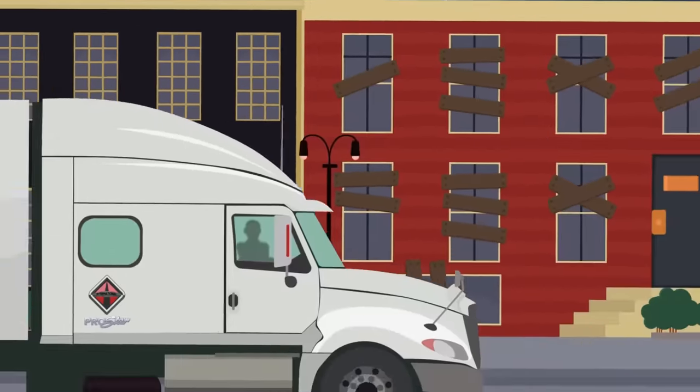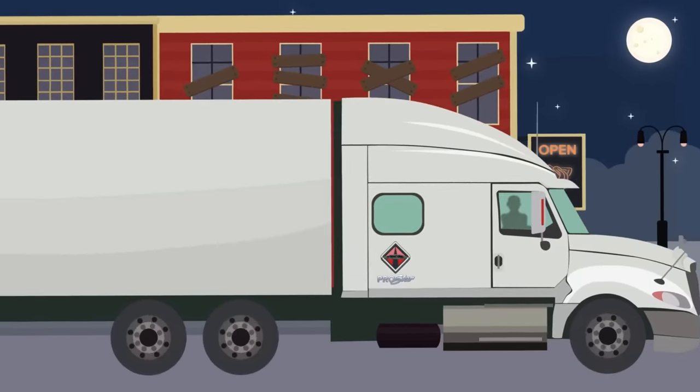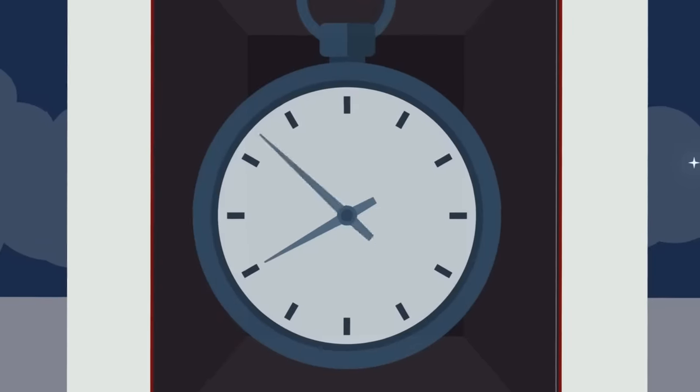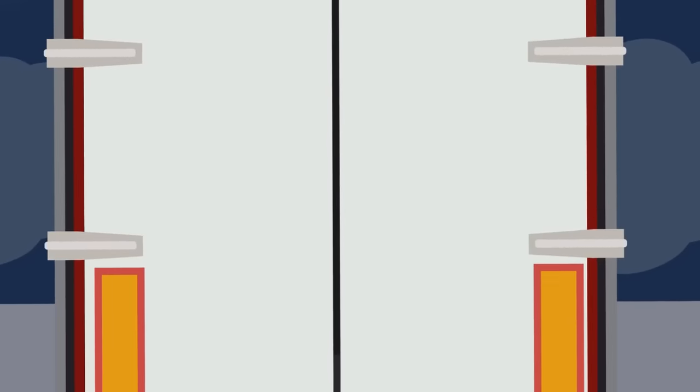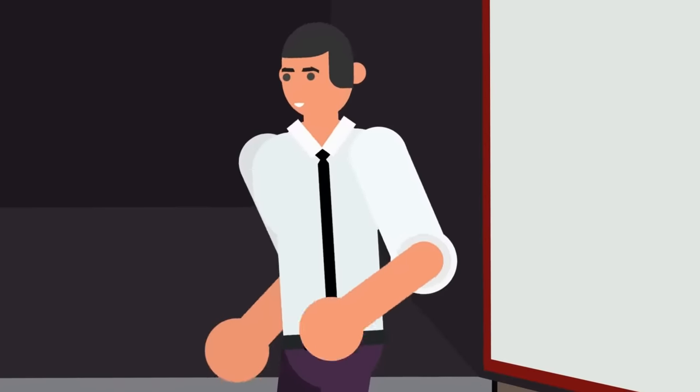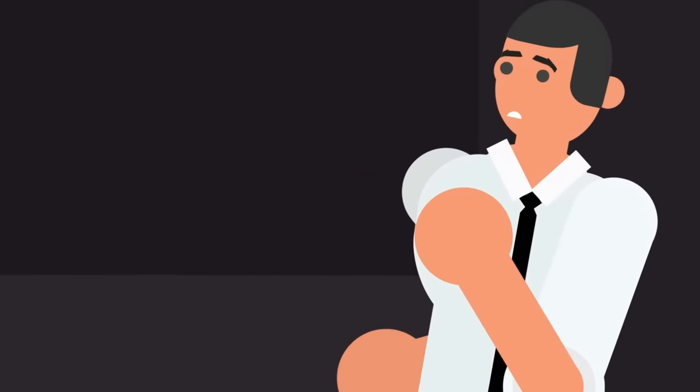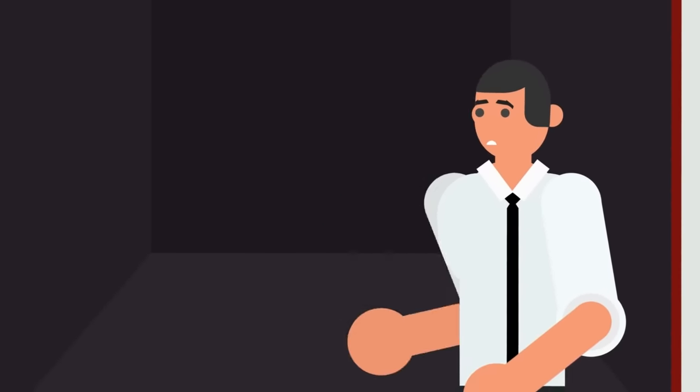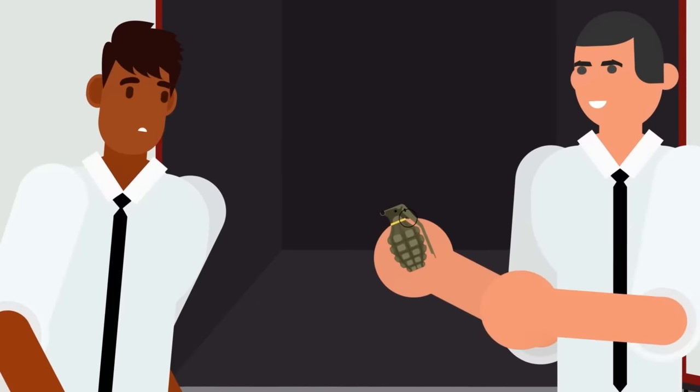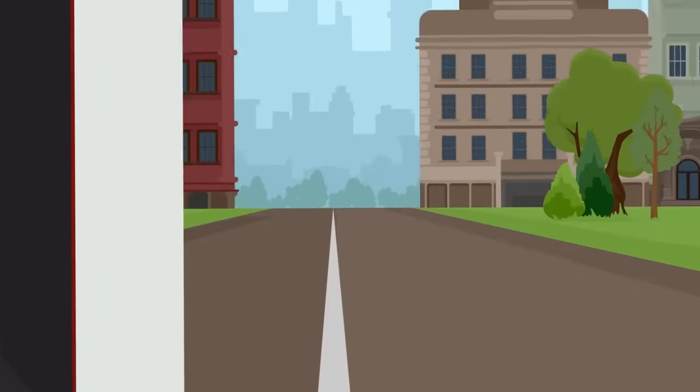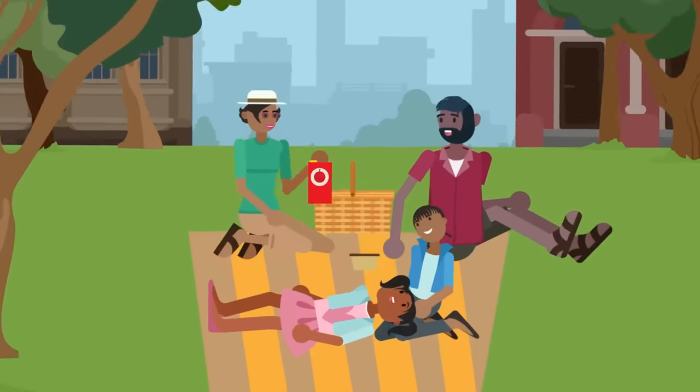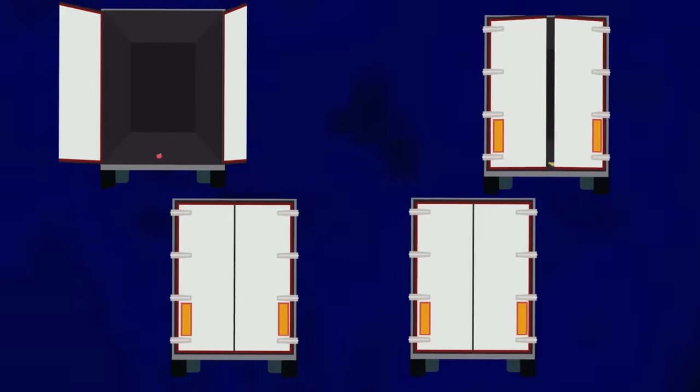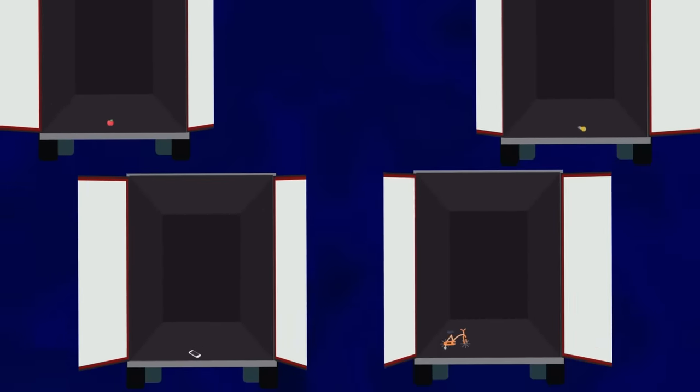At seemingly random times, supposedly determined by the SCP itself, it pulls over somewhere quiet and opens the door to its trailer. The door will remain open for sixty seconds, and then close again. Any attempts to enter the trailer have been blocked by some kind of invisible barrier, seemingly impenetrable to most approaches. More violent and destructive methods of entry cannot be authorized for testing, due to the heavy civilian population in the surrounding area. Every time the doors open, there is something different in the trailer.